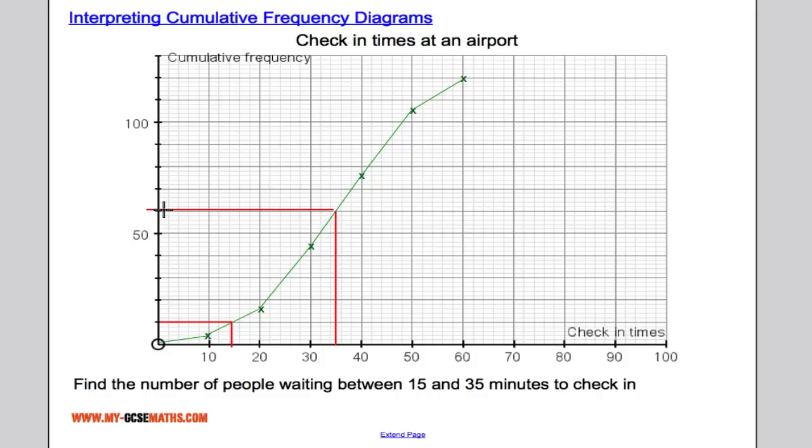And what I can see is we have 60 people waiting less than 35 minutes. We've got 10 people waiting less than 15 minutes. So the number of people between 15 and 35 minutes is going to be found by doing 60 take away 10. And 60 take away 10 is 50. So 50 people are waiting between 15 and 35 minutes.